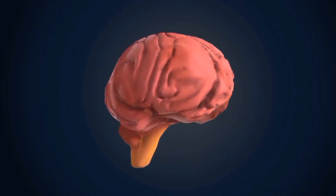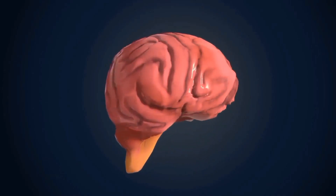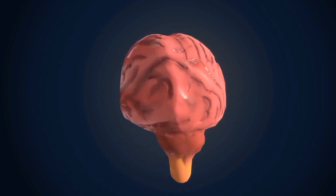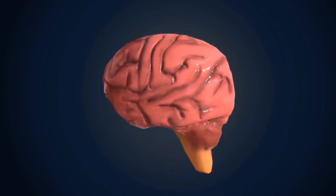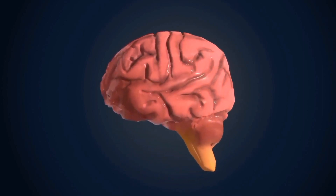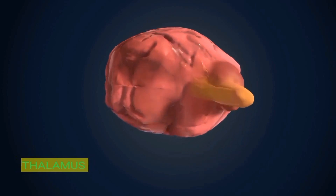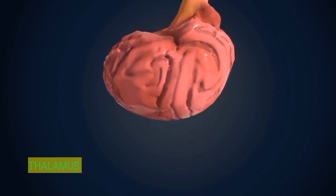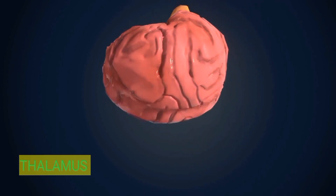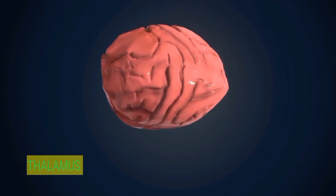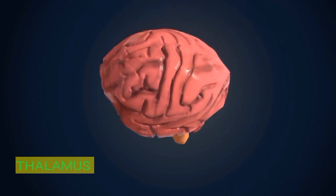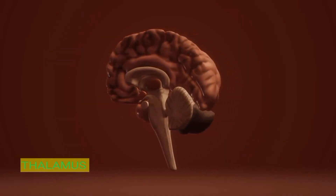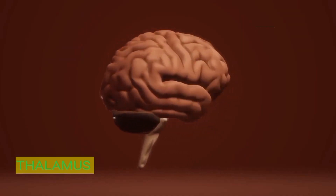On top of the brain stem, and sometimes classified as part of it, is the diencephalon. The main components of the diencephalon are the Thalamus and Hypothalamus. The Thalamus serves as a gateway relaying sensory signals originated throughout the body to the cerebral cortex. It is also involved in emotional and memory functions.